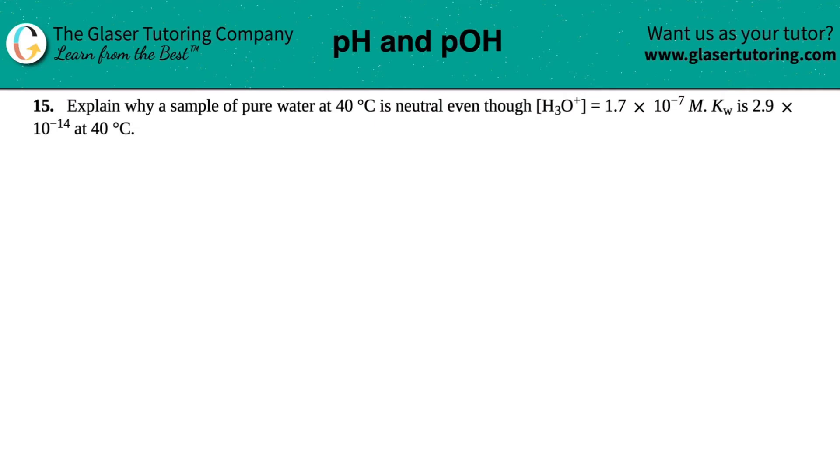Number 15, explain why a sample of pure water at 40 degrees Celsius is neutral, even though its H3O plus concentration is 1.7 times 10 to the negative 7th molarity. And they tell us that the KW is 2.9 times 10 to the negative 14th at 40 degrees Celsius.